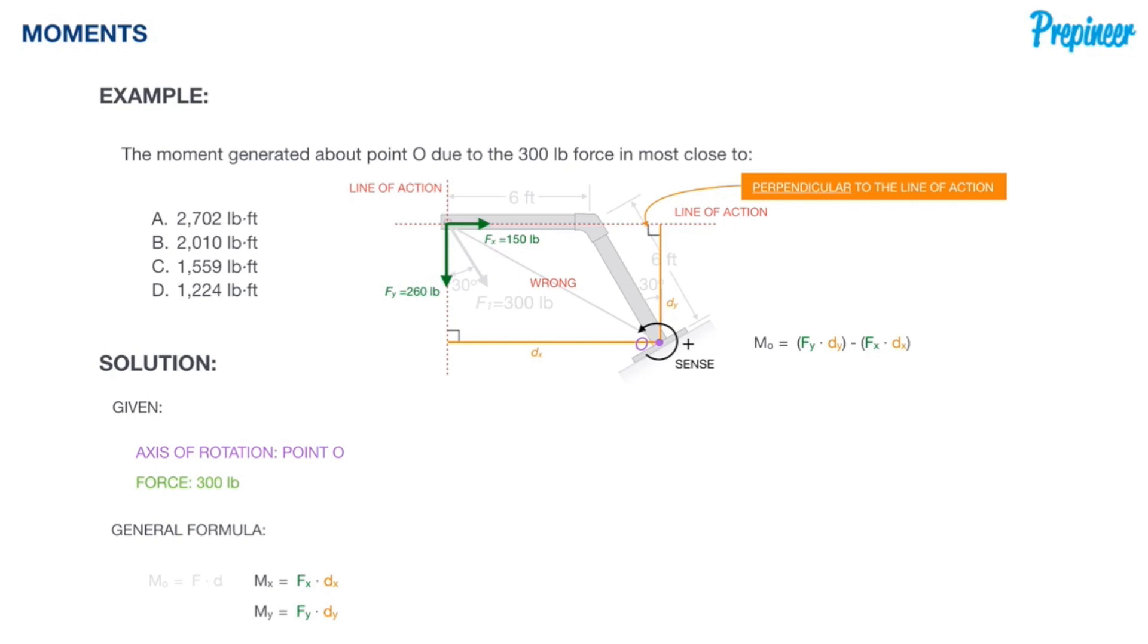We need to develop some right triangles, and we need to deploy our knowledge of SOHCAHTOA to get the values we need to complete our calculations. Again, what I want to do is mute everything so that we can just focus strictly on the geometric makeup that we are interested in.